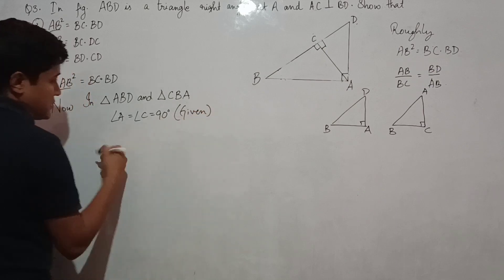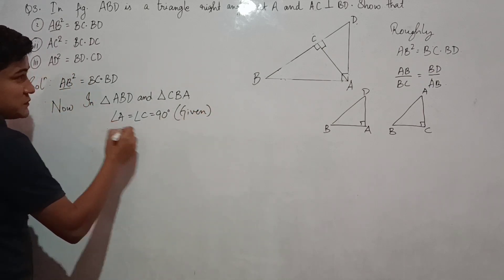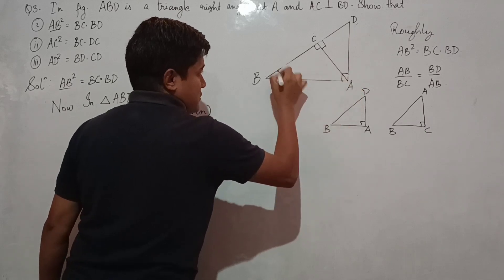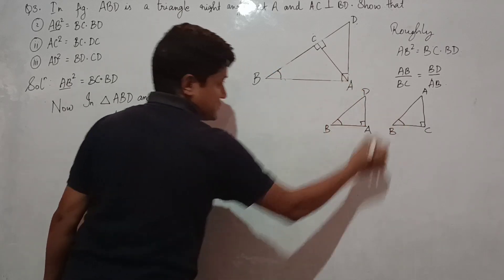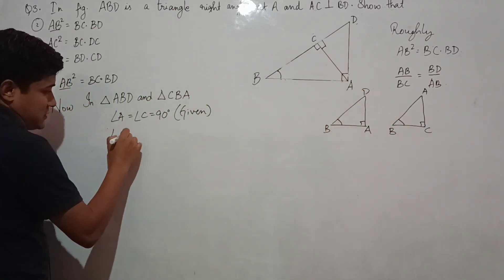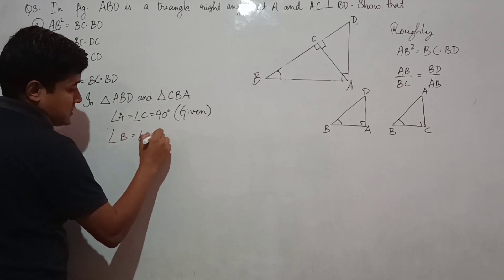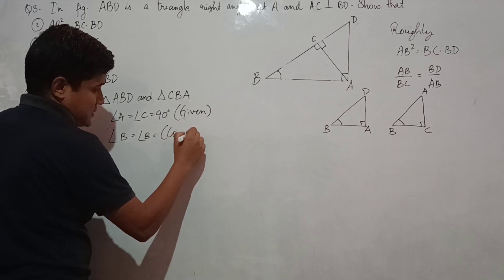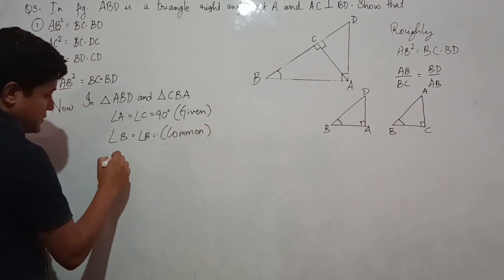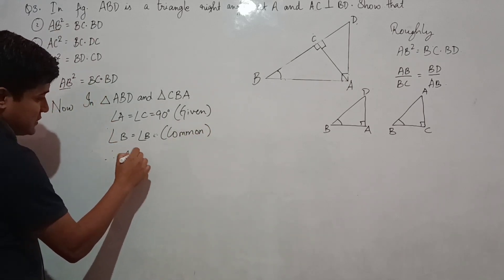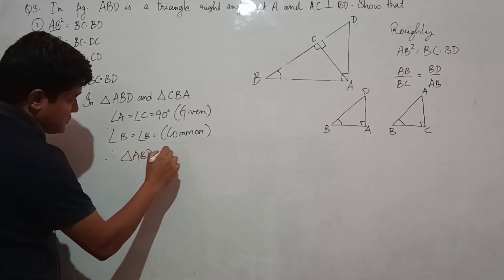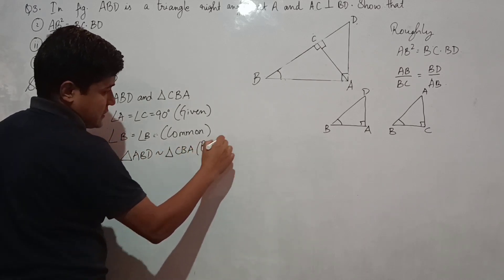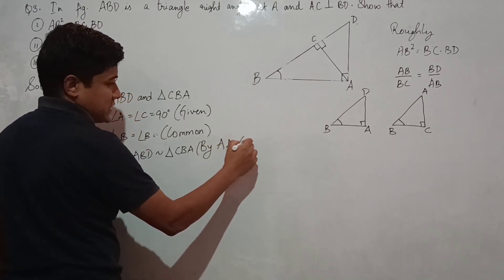Next, looking at the figure, the two triangles have a common angle B. So angle B equals angle B — they share angle B in common. Therefore, triangle ABD is similar to triangle CBA by the Angle-Angle (AA) criteria.